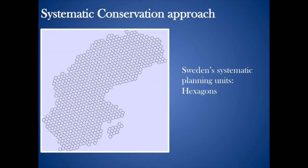The systematic conservation approach used was based on hexagonal planning units. Sweden is comprised of 938 hexagons. There are many different kinds of shapes that can be used for planning units, but hexagons produce more efficient and less fragmented portfolios. Hexagons can also be arranged in a more spatially compact manner and therefore need fewer superfluous planning units to form patches containing the important conservation features.